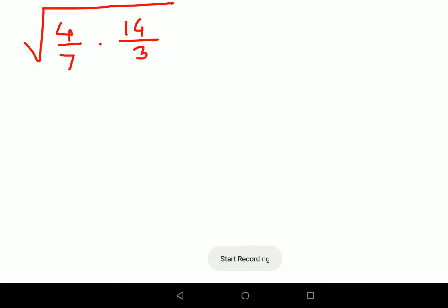Welcome everyone. Today we're going to solve this radical question: the square root of 4 upon 7 into 14 upon 3. What is the value of that?